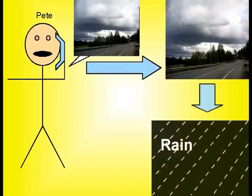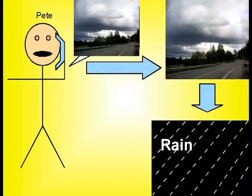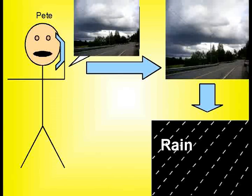And overcast is evidence for rain. So if Pete tells you it's overcast outside, is that evidence for rain?